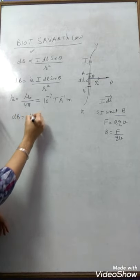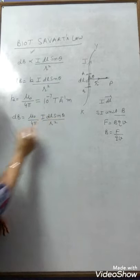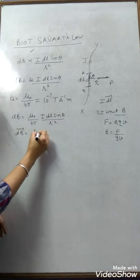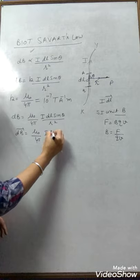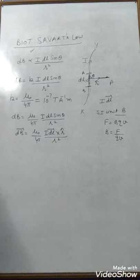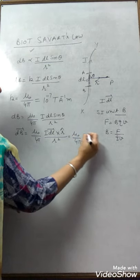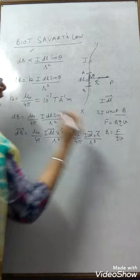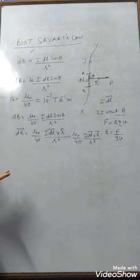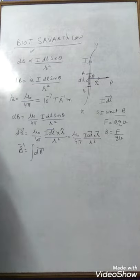So we write dB = (μ₀ / 4π) × (I dL sinθ / R²). In vector form: dB = (μ₀ / 4π) × (I dL⃗ × R̂ / R²). This is a cross product because of the sine theta. It can also be written as (μ₀ / 4π) × (I dL⃗ × R⃗ / R³). For the total magnetic field, we take the summation of these small dB vectors. The direction, being a cross product, is again determined by the right-hand thumb rule.